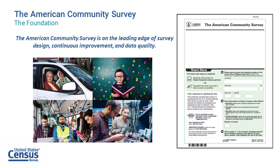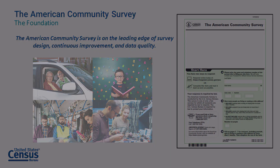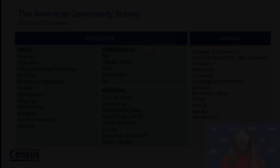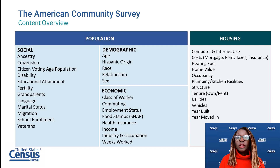Our estimates covering more than 40 topics support more than 300 federal uses and countless non-federal uses. The American Community Survey content can be grouped into four main types of characteristics: social, demographic, economic, and housing.